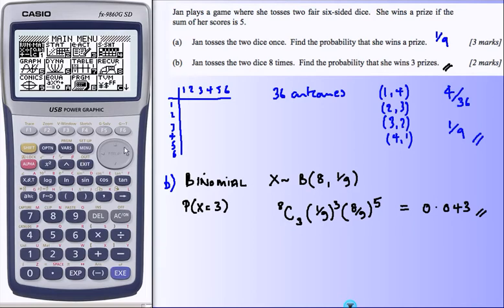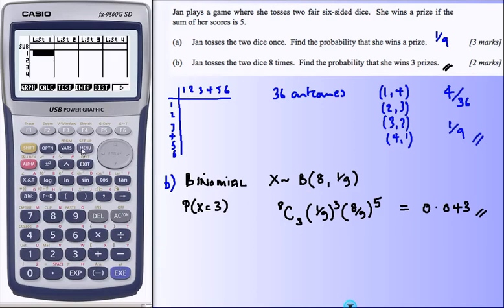Back to the menu. Statistical, distributions, binomial. One for individual probabilities, one for cumulative, adding probabilities up. We just want one of them.